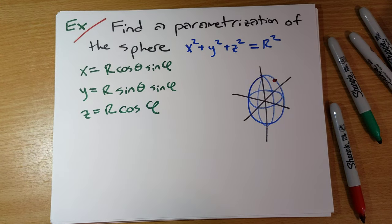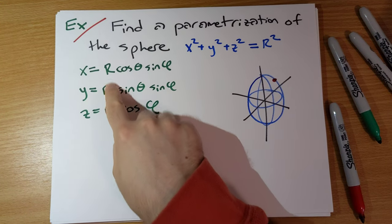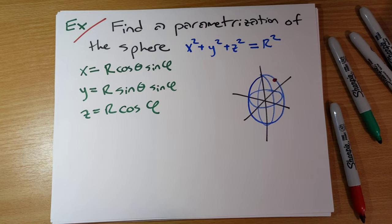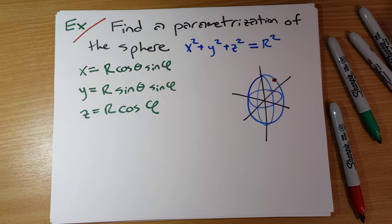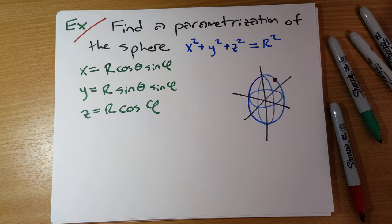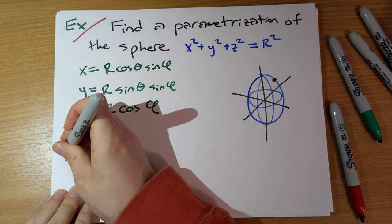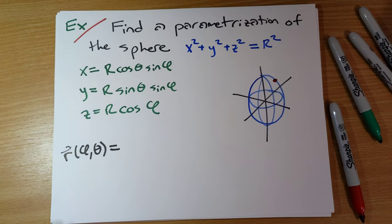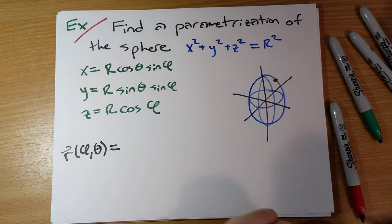So this is just our usual spherical coordinates, where I'm replacing the usual rho with a capital R here. The thing to realize is that this is our parameterization. What are our parameters? Our parameters are phi and theta, not R. R is a constant.